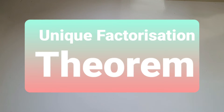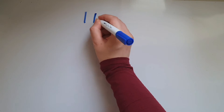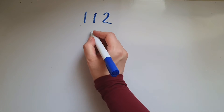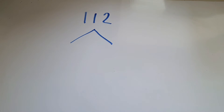In this video we'll learn about the unique factorization theorem and prime factorization including product notation. We've done this before when we looked at highest common factors and lowest common multiples. So when we had numbers such as 112, we did prime factorization in order to work out the highest common factors and lowest common multiples.